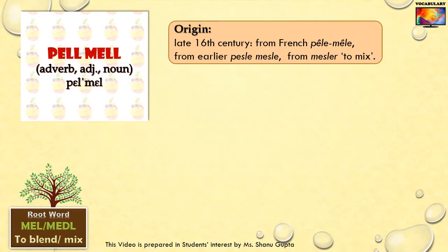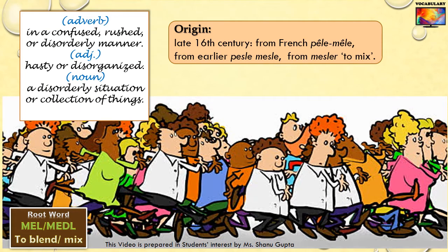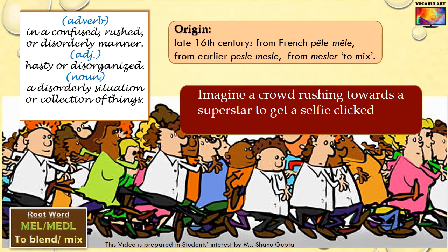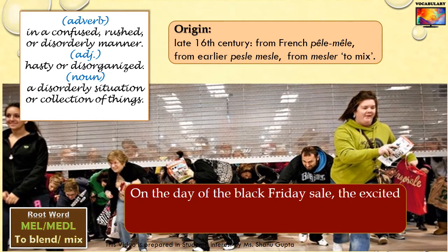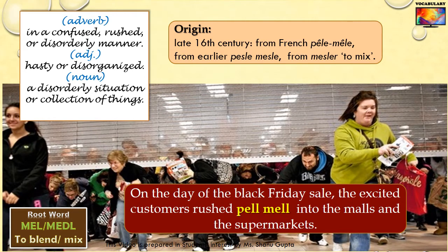The last word derived from meddle is pell-mell. This word may be used as an adverb, an adjective or even a noun. When things get mixed up, it creates confusion and a disorderly state — that is essentially the meaning of pell-mell. In India, if one spots a superstar at a public place, the whole crowd rushes towards him to get his signature or a selfie. How would you describe it? It's a pell-mell. Similarly, look at the excited customers rushing pell-mell into malls during a Black Friday sale.